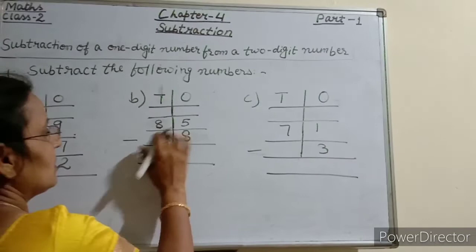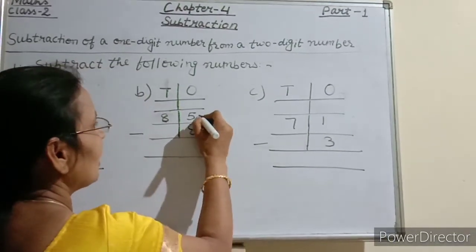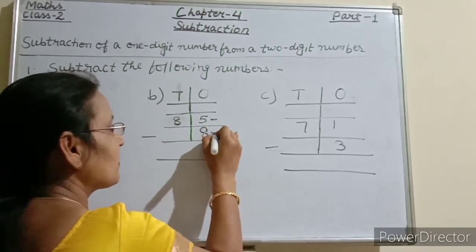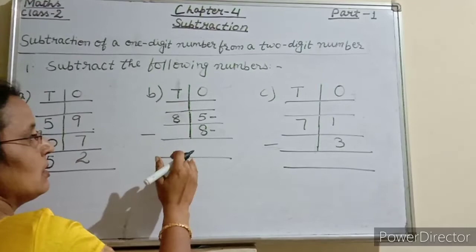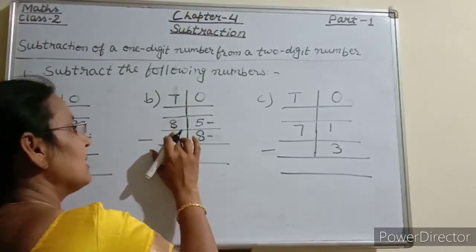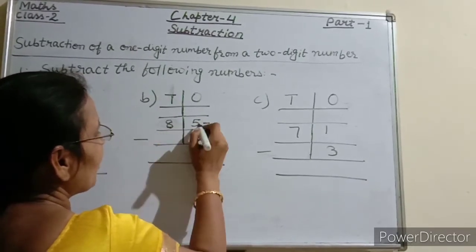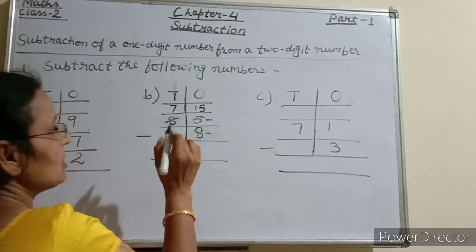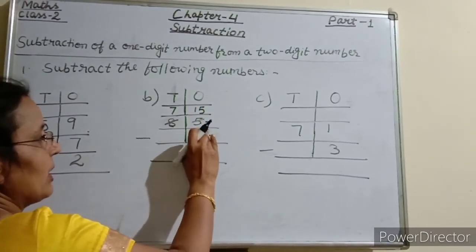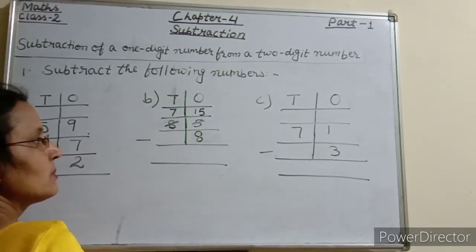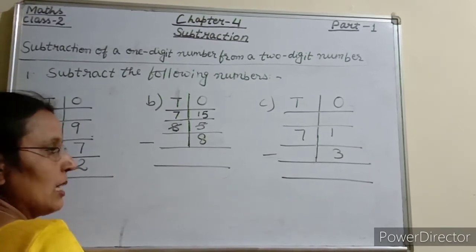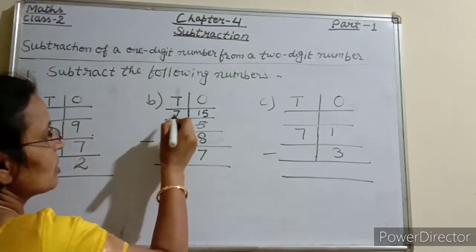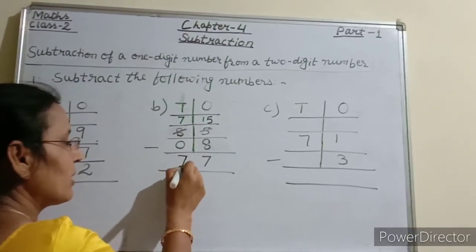Next: 85 minus 8. At the ones place, 5 is less than 8, so we borrow from the tens. 5 becomes 15 and 8 becomes 7. 15 minus 8 equals 7, and 7 minus 0 equals 7. So 85 minus 8 equals 77.